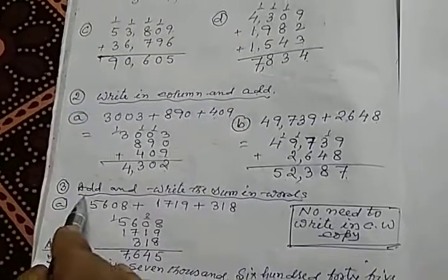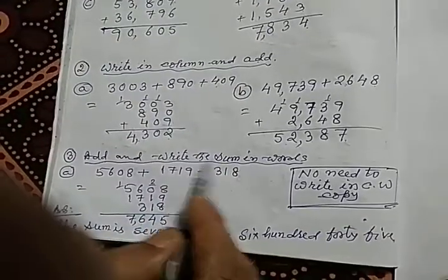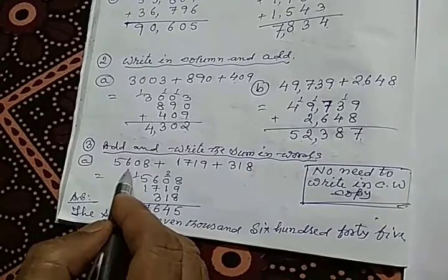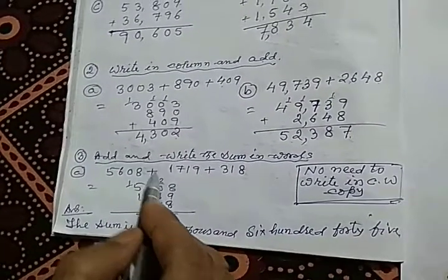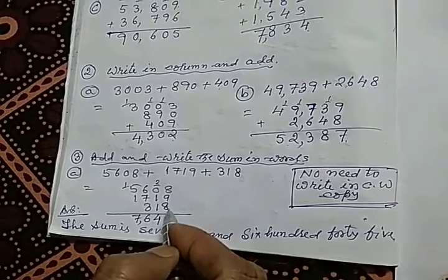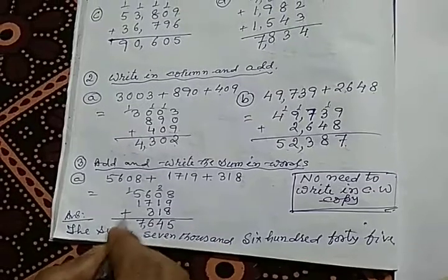And the last item is add and write the sum in words. Here are three numbers side by side with plus sign. First of all, we have to arrange these three numbers. Here will be plus sign. So, three numbers are arranged in column first time.